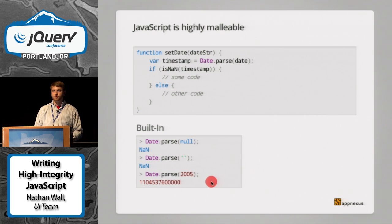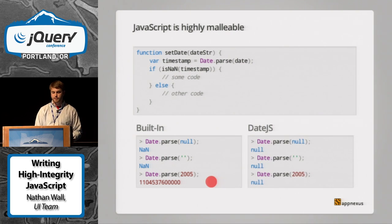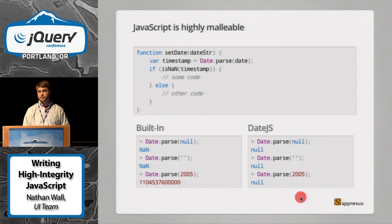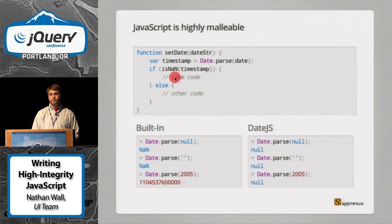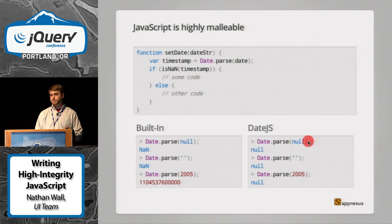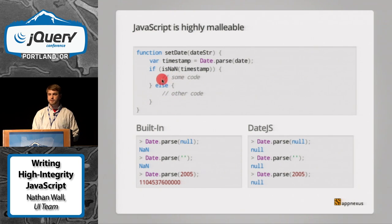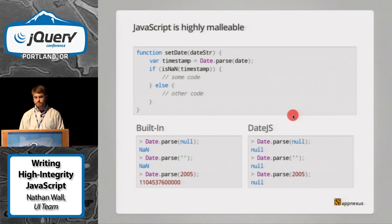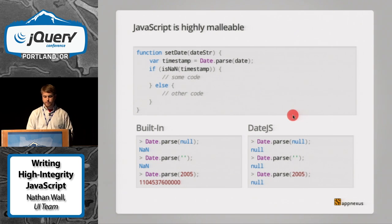If you pass in the number 2005, you get a giant number corresponding to the end of 2004. But if you're using date.js, when you do date.parse on null you get null, not NaN. Same for empty string and 2005 — you get null. This creates a problem because null is not NaN. When you run isNaN on null, you don't get true, you get false. So if you pass in those strings using date.js, we'd run the wrong code path. JavaScript's malleability means that if you include date.js later, your conditions are going to change.